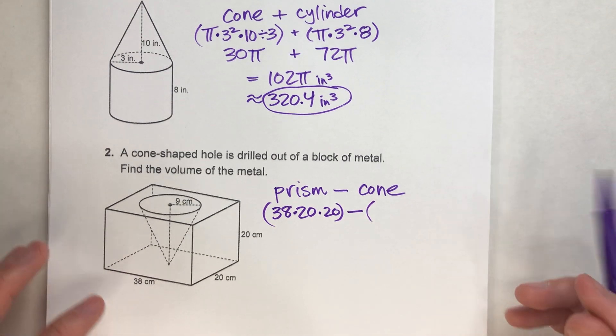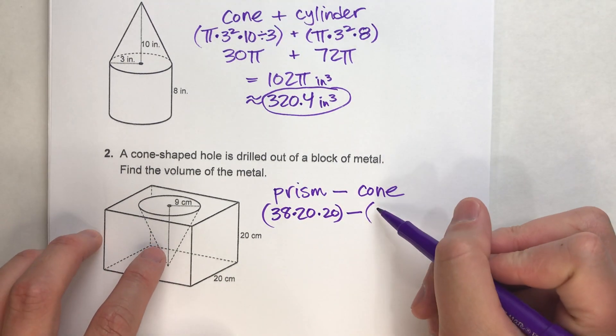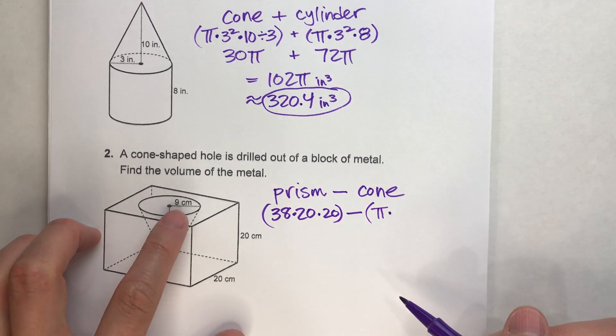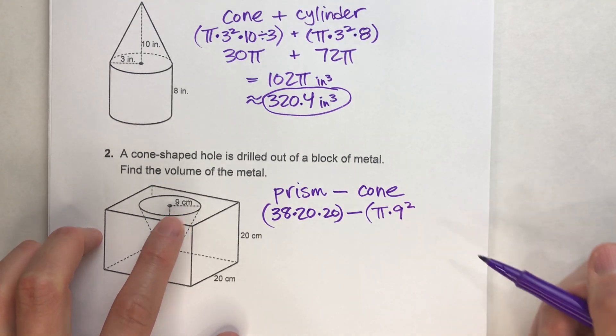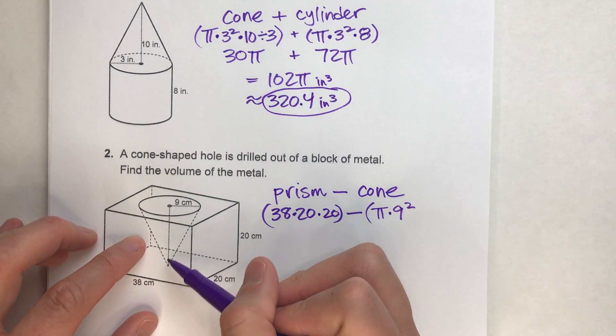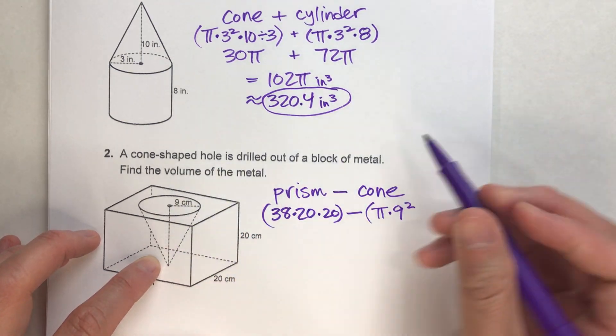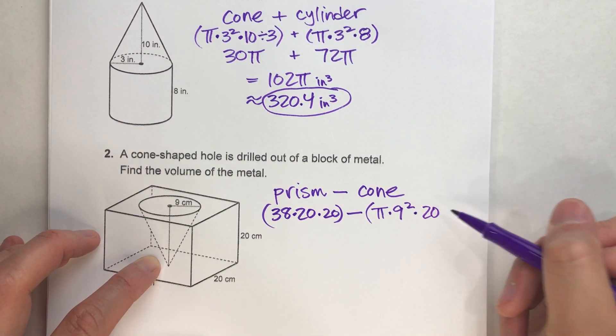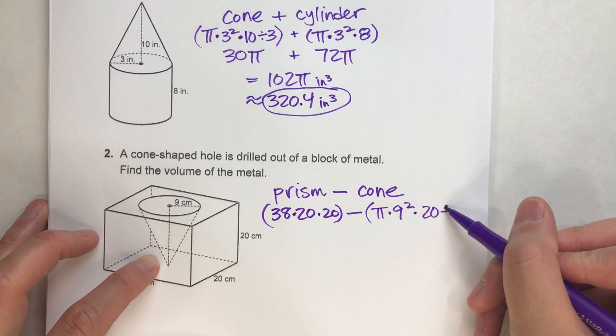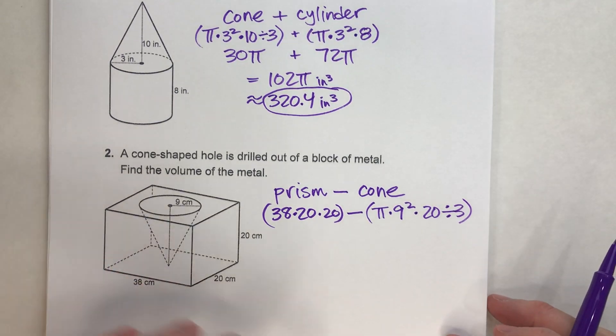Minus, now my cone, we just did the cone formula. It's pi times the radius squared times the height, which it looks like the height is just the same height as this block. It goes from the top to the bottom. And then don't forget to divide by 3.